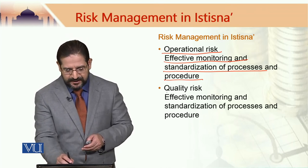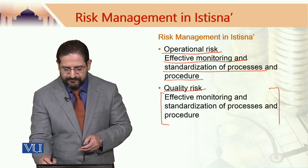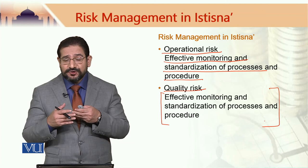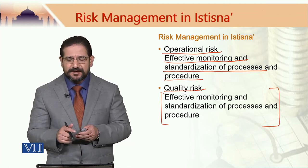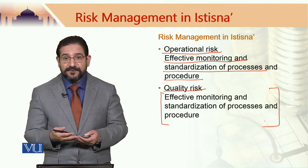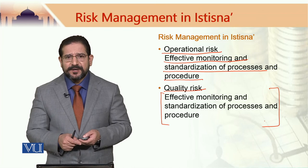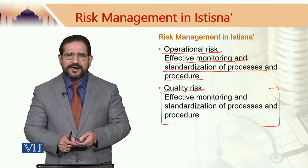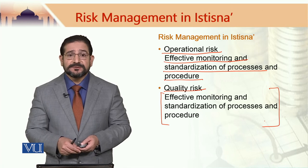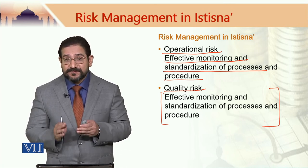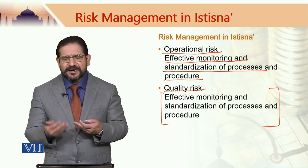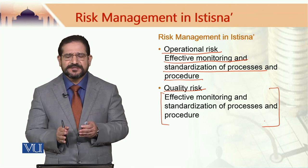Quality risk — again, I would like to emphasize the role of effective monitoring and standardization of processes and procedures. If you are not happy with one aspect of a project, try to identify it earlier so that it could be rectified. For example, if you have not been monitoring a commercial tower and at the end when it is delivered you find that the tower is too hot and does not have a proper air conditioning system — however, if this was identified at an earlier stage, the design could have been modified. These are very practical measures to minimize risk in istisna.